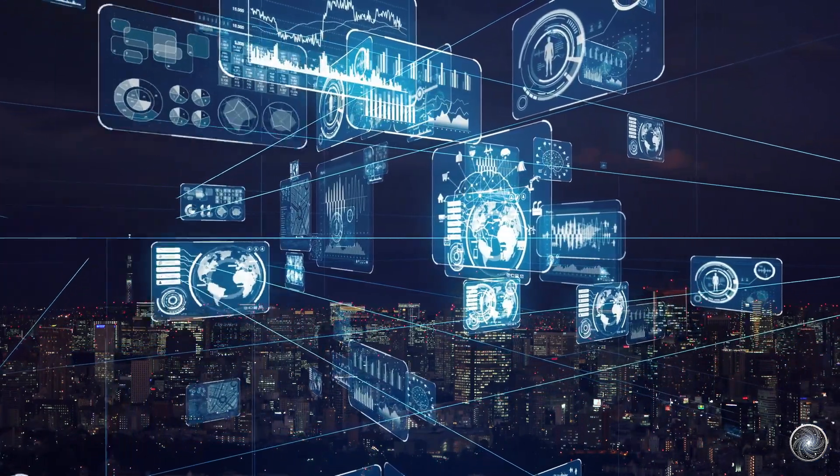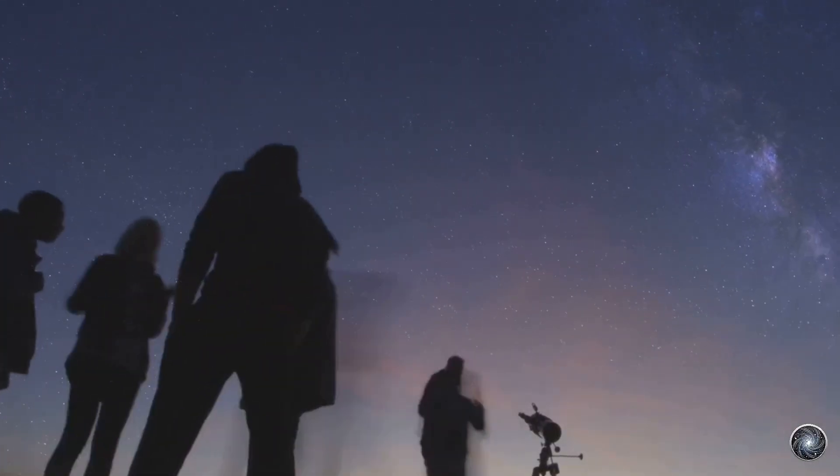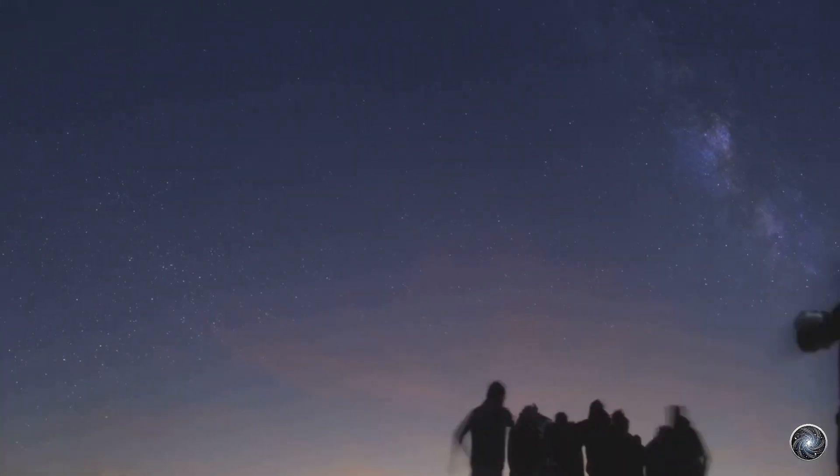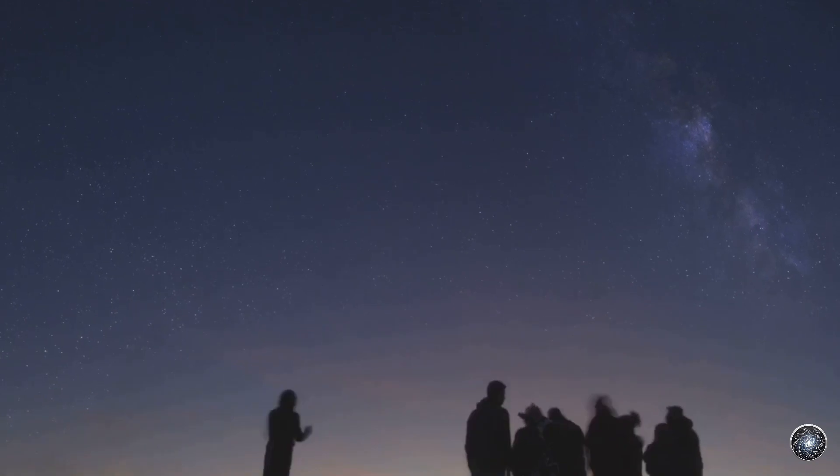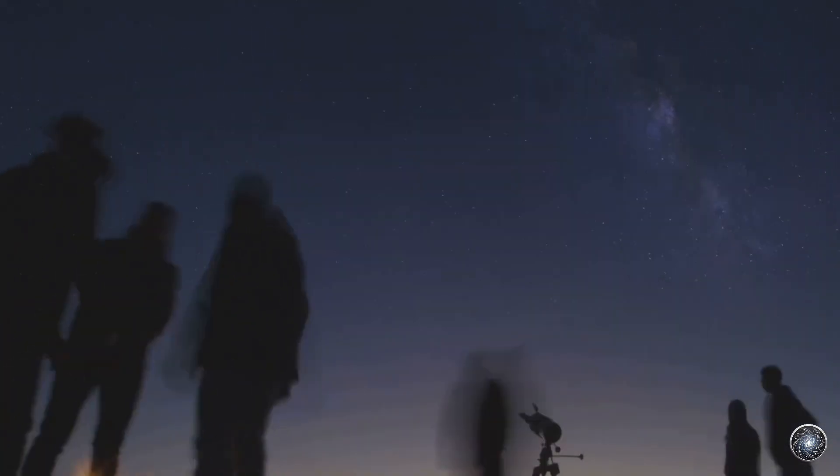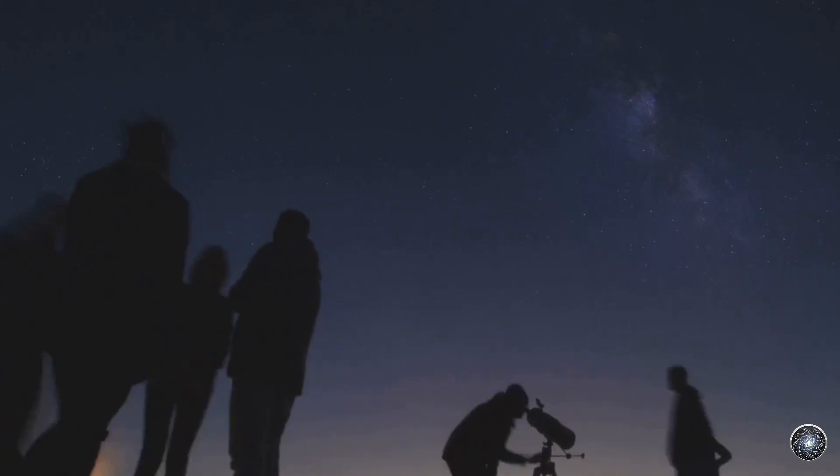They also helped us understand things in space by looking at the light from stars and galaxies far away. By studying the electromagnetic spectrum, astronomers can determine the composition, temperature, distance, and motion of celestial objects unlocking the secrets of the universe.